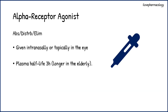Coming to the pharmacokinetic properties of alpha receptor agonists: these drugs are given intranasally or topically in the eye. The plasma half-life is around 3 hours, whereas the plasma half-life is longer in elderly patients.